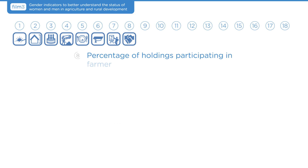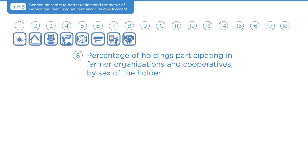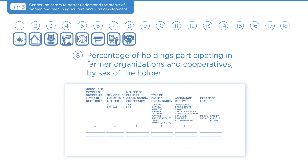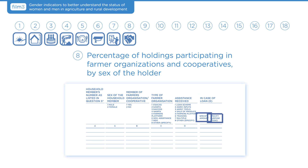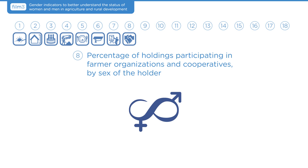Indicator 8 is the percentage of holdings participating in farmer organizations and cooperatives by sex of the holder. Few countries in Europe and Central Asia have readily available data on this indicator, and existing data are usually not sex-disaggregated. An example questionnaire model from the FAO Agri-Gender Toolkit allows collection of gender-sensitive data on household members' associations and farmers' organizations, the type of assistance received, the size of loans received, and the purpose for which loans were granted. Aggregation by sex of the holder can illustrate the gender gap in membership and related benefits.